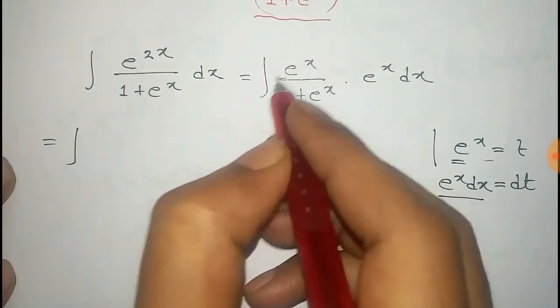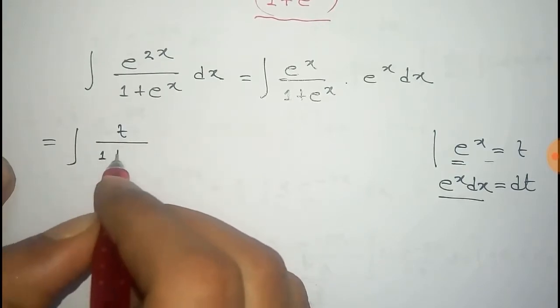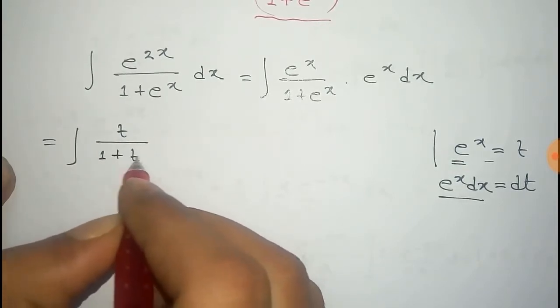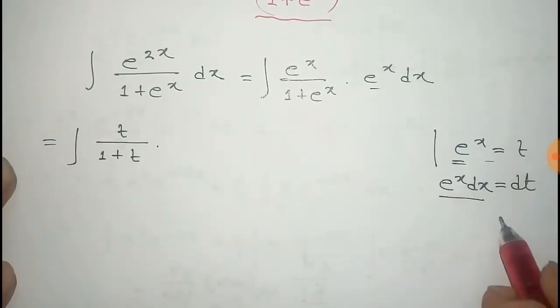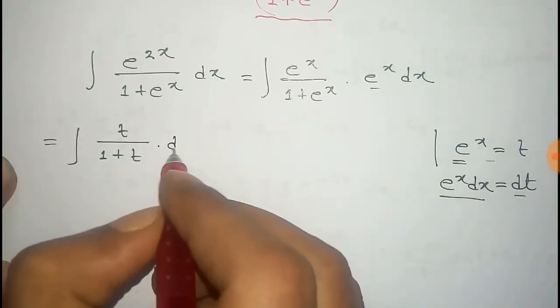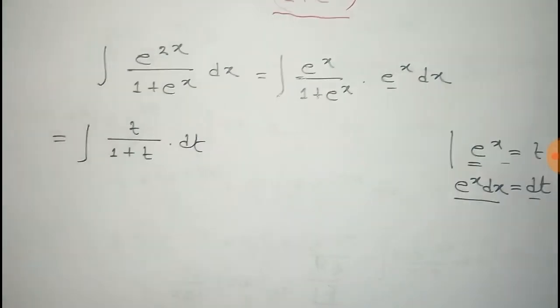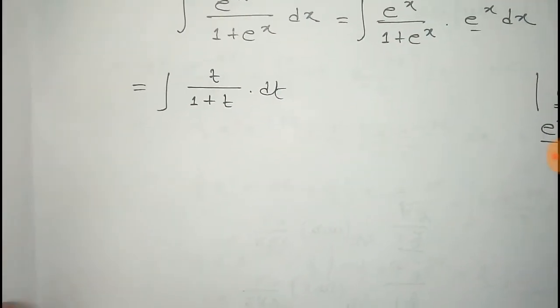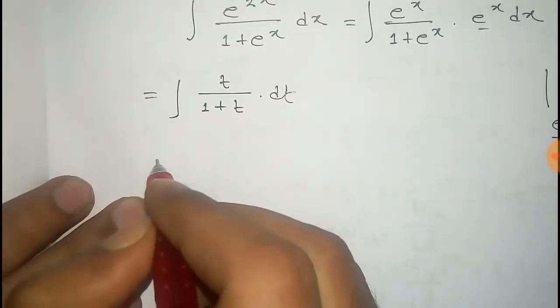Putting these values, we get the integral of t by 1 plus t — that is the value of e to the power x — into dt. Now we can easily integrate this.